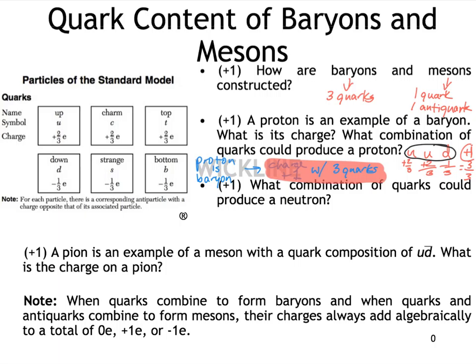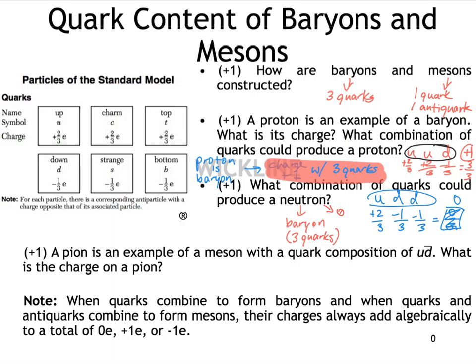What combination of quarks could produce a neutron, which is also a baryon? It has to contain three quarks, and neutrons have a charge of zero. Up, down, down works: one up is positive two-thirds, and two downs are each negative one-third, giving positive two-thirds minus one-third minus one-third equals zero-thirds, or a charge of zero. So the quark content of a neutron is up, down, down.